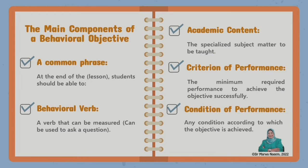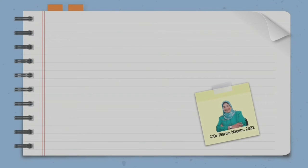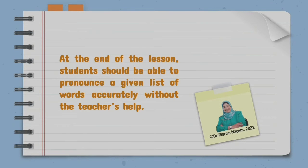And now let's take some examples and analyze them in order to get the idea. The first example we have, this is an ideal objective, behavioral objective: At the end of the lesson, students should be able to pronounce a given list of words accurately without the teacher's help. Take a breath in order to write down this objective before we analyze it.